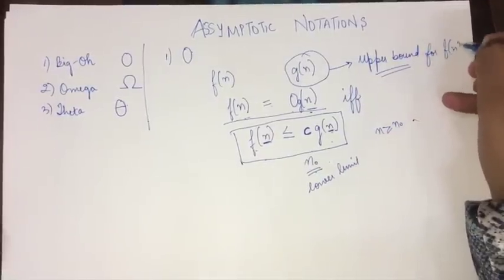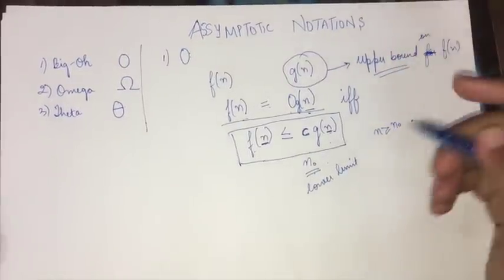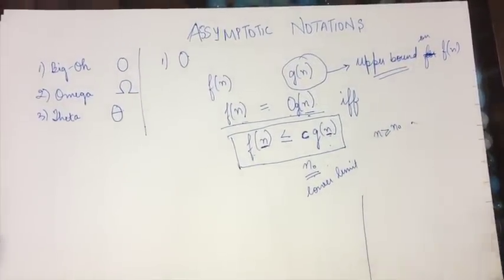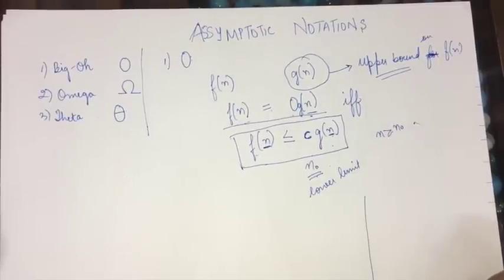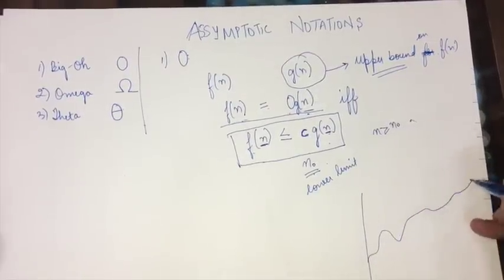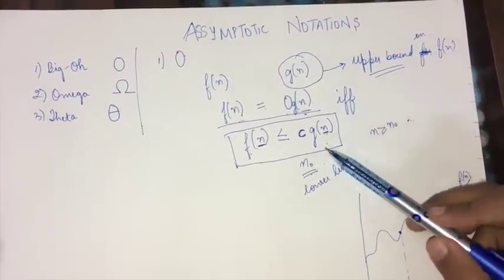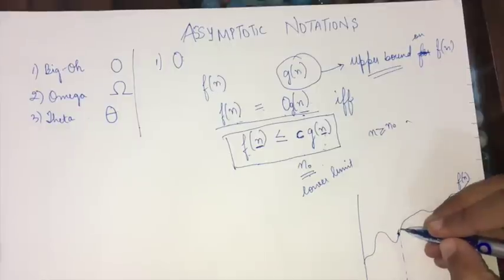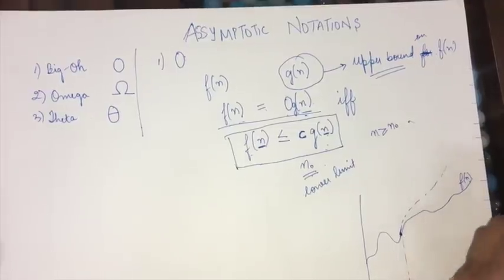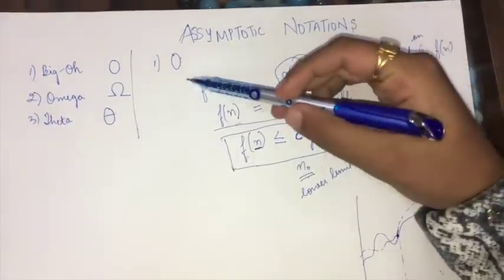We can show this with the help of a graph. This is our graph with n on the x-axis and function value on the y-axis. At n₀, we have a random function f(n). After this particular value n₀, the function c·g(n) has to be greater than f(n). Before n₀, it can be anything. This is about the Big O notation.